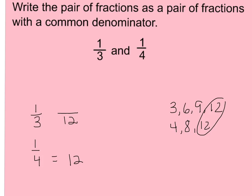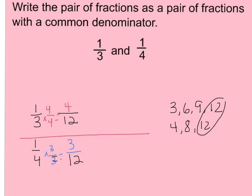One-fourth equals how many twelfths? Like we learned in class last week, one-fourth times three-thirds equals three-twelfths, because four times three is twelve and one times three is three. And now let's look at one-third. One-third times four-fourths — because three times four is twelve, so one times four is four. So do they have common denominators now? Yes they do. One-fourth equals three-twelfths, and one-third equals four-twelfths. I found common denominators.